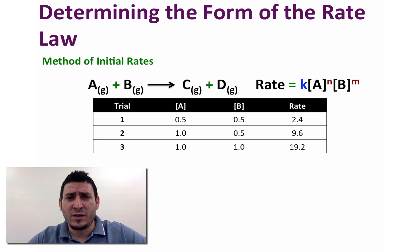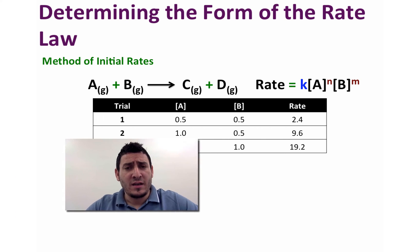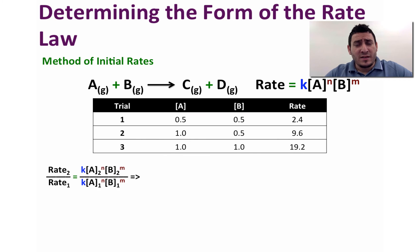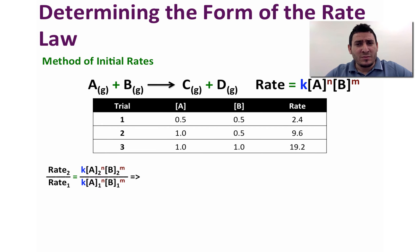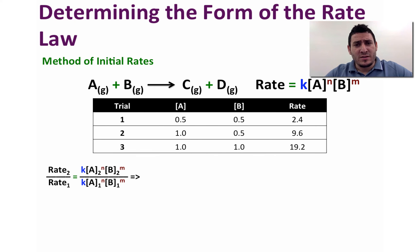How is this going to help us determine N and M? We take the ratio between the reaction rates of trials 1 and 2: rate 2 divided by rate 1 equals K times the concentration of A in trial 2 to the power N times the concentration of B in trial 2 to the power M, divided by K times concentration of A in trial 1 to the power N times concentration of B in trial 1 to the power M.